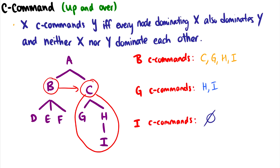That's all the terminology you need to know about tree structure relations: domination, labels for nodes, terminal and non-terminal nodes, mothers, daughters, sisters, and C-command. These are the big points from tree structure relations, and every syntactician studying generative grammar will be talking about these for your entire syntax career — they're all super important concepts. If you have any questions, leave them in the comments below.